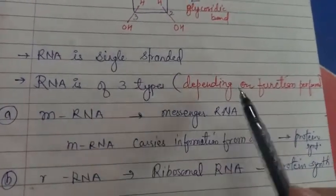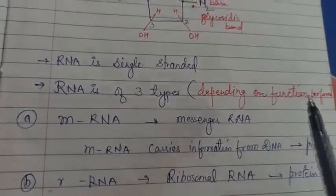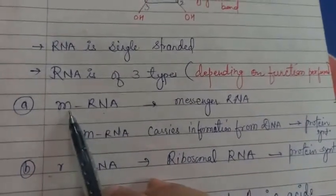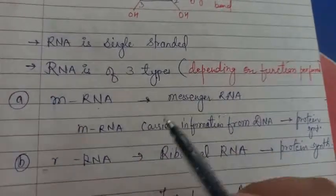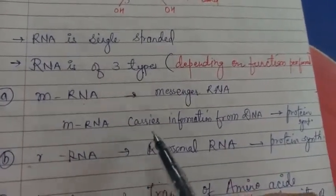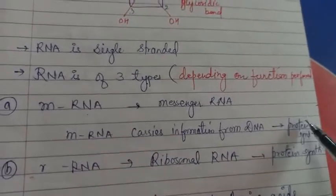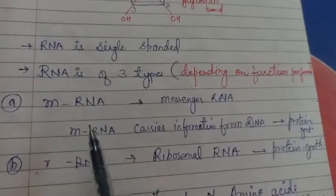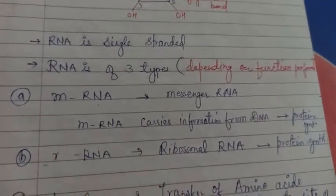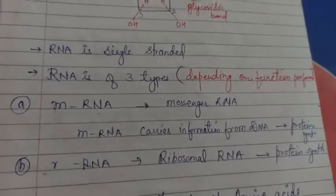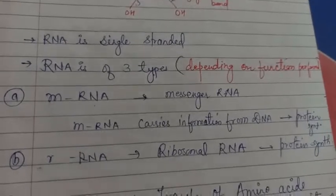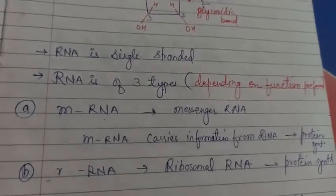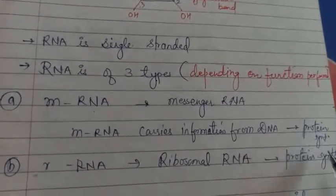RNA is of three types. Three types depending upon the function they perform. Messenger RNA, that is in short it is written as mRNA. What is the function of mRNA? mRNA carries information from DNA for the purpose of protein synthesis. Messenger RNA is called messenger RNA because it carries the message.